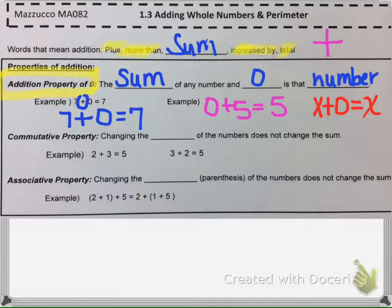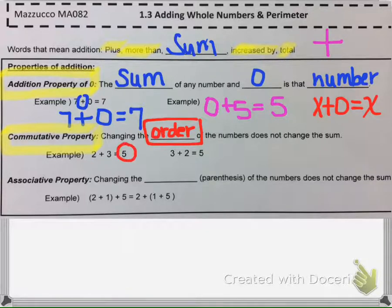The next property is called the commutative property. The commutative property says changing the order of the numbers does not change the sum. So if we have 2 + 3, that's 5. If we have 3 + 2, it's still 5. All we did was switch the order of the numbers, but the sum still stays the same.